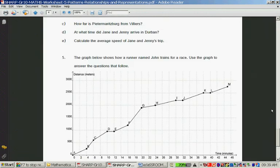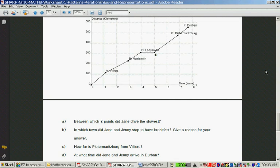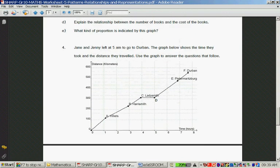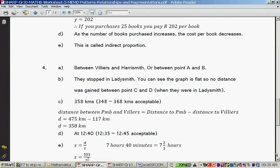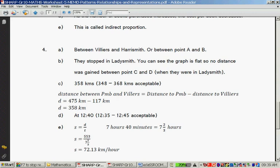And the last one. Calculate the average speed of Jane and Jenny's trip. Average speed is total distance divided by total time. So Durban is around about 560 away from home divided by 7 hours. And remember, 45 minutes is three quarters of an hour. Distance is 7 hours, 40 minutes. Now 40 minutes is two-thirds of an hour because you go 40 divided by 60 and 40 over 60 simplifies to 2 over 3. So you take the total distance which is 553 or your distance that you read off the graph divided by 7 and two-thirds and that gives you 72.13 kilometers per hour.